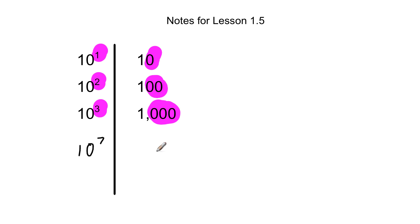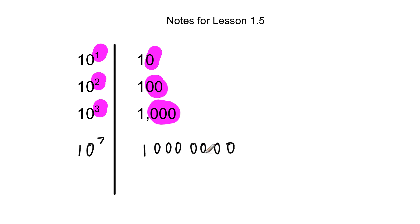What about ten to the seventh power? There will be seven zeros — one, two, three, four, five, six, seven — with a one on the front. So ten to the seventh power is ten million. What about ten to the twenty-third power? Of course, there are going to be twenty-three zeros, but I'm not going to write them all out right now.